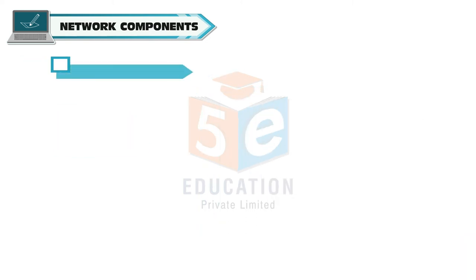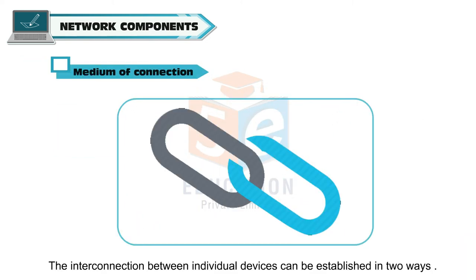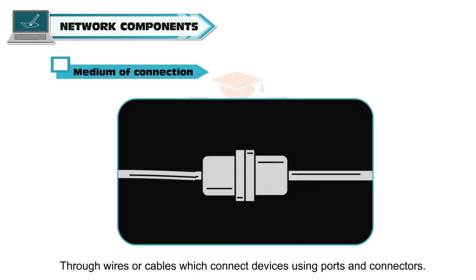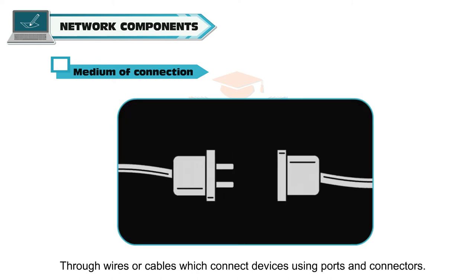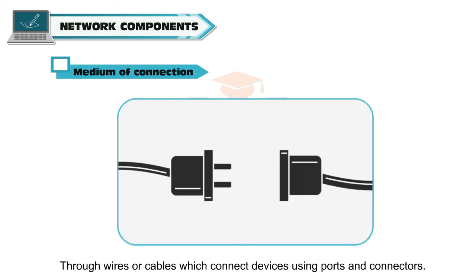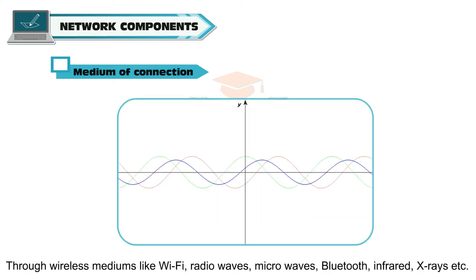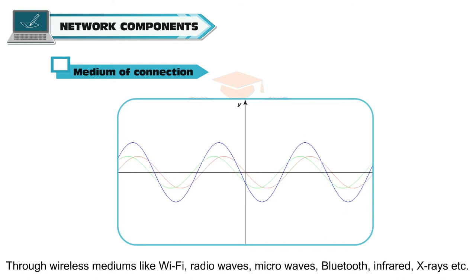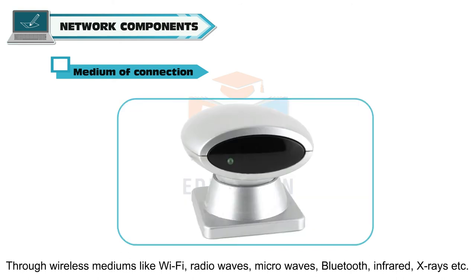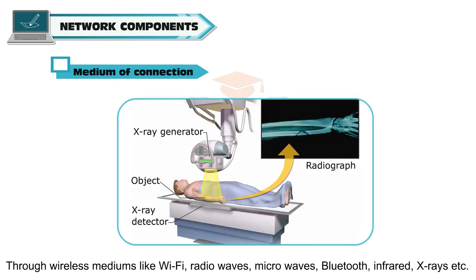Medium of Connection: the interconnection between individual devices can be established in two ways — through wires or cables which connect devices using ports and connectors, or through wireless mediums like Wi-Fi, radio waves, microwaves, Bluetooth, infrared, etc.